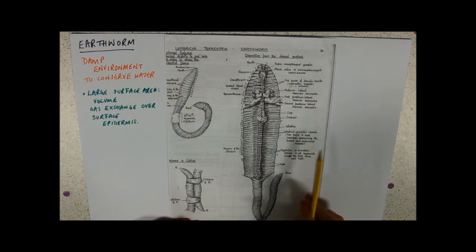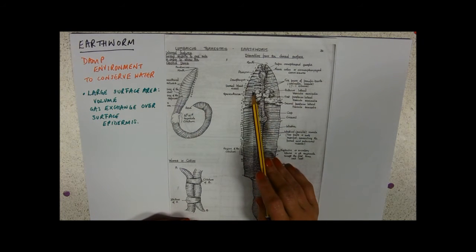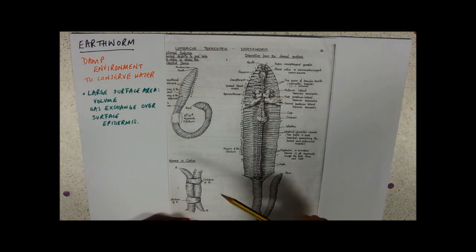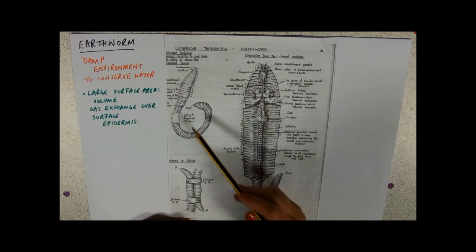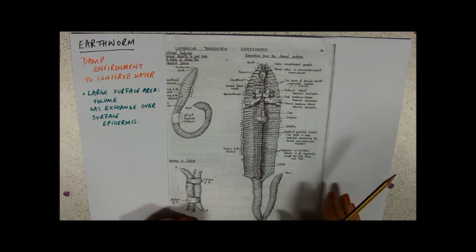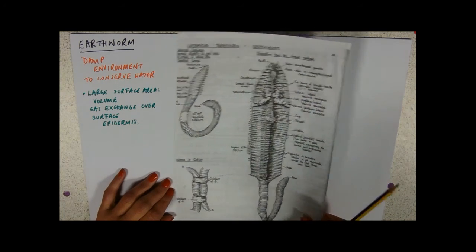And this is how they have sex. They're hermaphrodites, so you can see that we've got spermathecae for storing sperm, we've got seminal vesicles here, and they kind of wrap around each other—that's what this segment, the clitellum, is for—and exchange sperm, which is interesting.